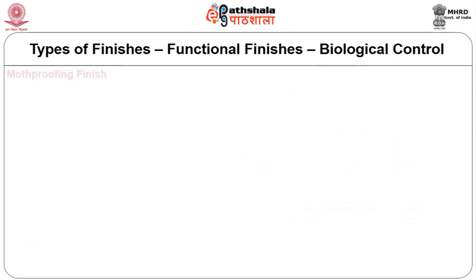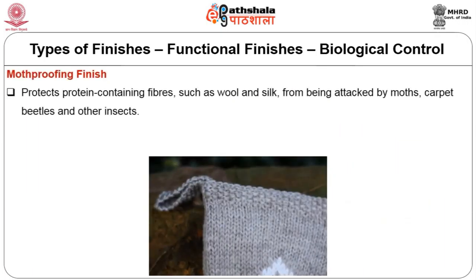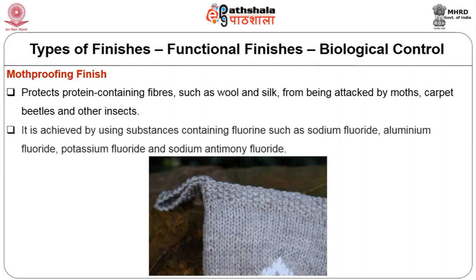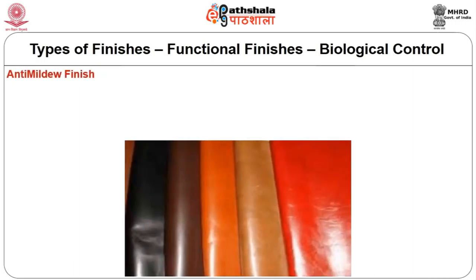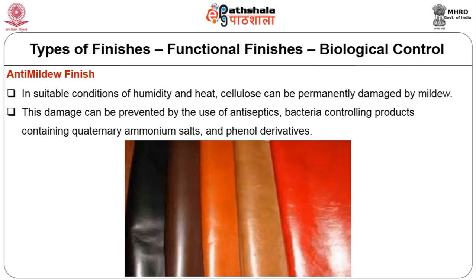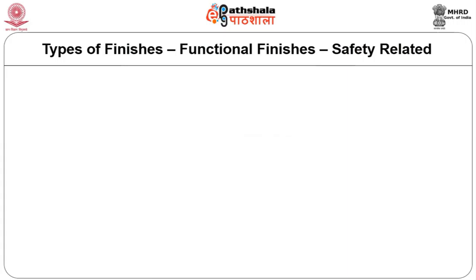Moth proofing finish protects protein-containing fibers such as wool and silk from being attacked by moths, carpet beetles and other insects. It is achieved using substances containing fluorine such as sodium fluoride, aluminum fluoride, potassium fluoride and sodium antimony fluoride. Anti-mildew: in suitable conditions of humidity and heat, cellulose can be permanently damaged by mildew. This damage can be prevented by the use of antiseptics and bacteria-controlling products containing quaternary ammonium salts and phenol derivatives.